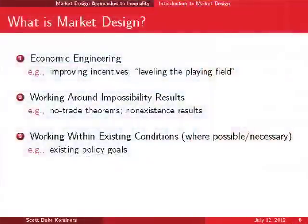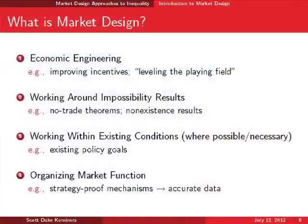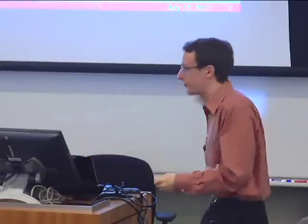We work within existing conditions. Kidney exchange exists partially because people refuse to sell kidneys. Even if a market for kidneys would be more efficient, you can do intermediate things that improve allocation efficiency without going to a full market solution. Another bonus that comes out of organizing market function is that you get real data and learn actual things about what people in the market want. When you have a strategy-proof mechanism—where truthfulness is a dominant strategy—you can learn people's true preferences. If you want to know if there's a school everybody hates, you can learn that from their preference lists.